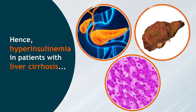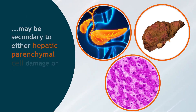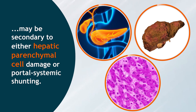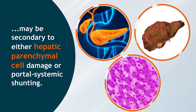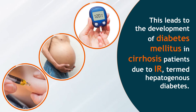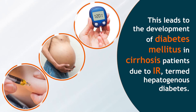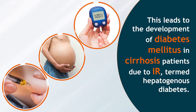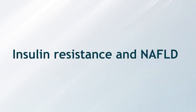These studies have also shown that the portal vein delivers blood glucose to the liver; hence hyperinsulinemia in patients with liver cirrhosis may be secondary to either hepatic parenchymal cell damage or portal systemic shunting. This leads to the development of diabetes mellitus in cirrhosis patients due to IR, termed hepatogenous diabetes.